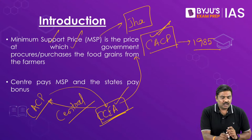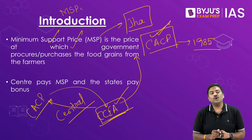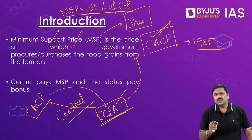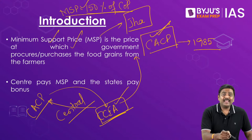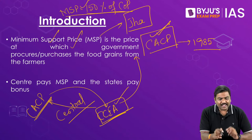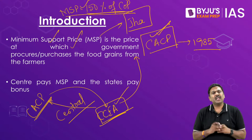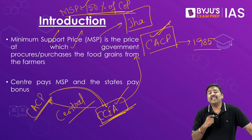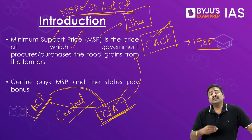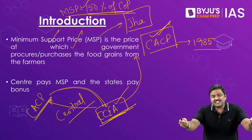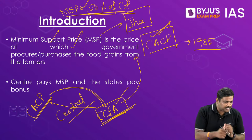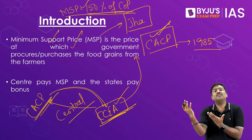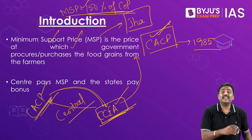Right now, the government policy is that MSP will be equal to 150% of cost of production. Whatever MSP is recommended by the CACP based on various factors, the government will announce it as 150% of cost of production. Importantly, the recommendations of CACP are not binding on the CCEA. The CCEA, which also seeks viewpoints of various state governments and agencies, might decide a completely different value of MSP — either lower or higher than the CACP recommendation.